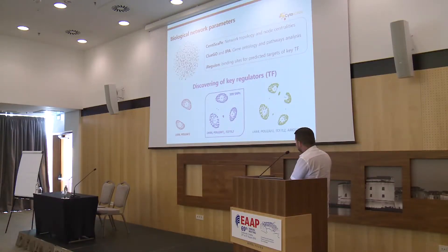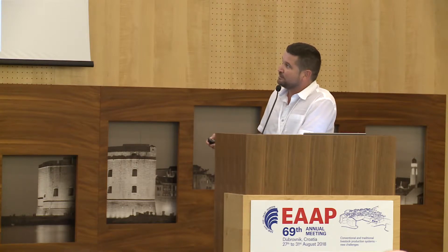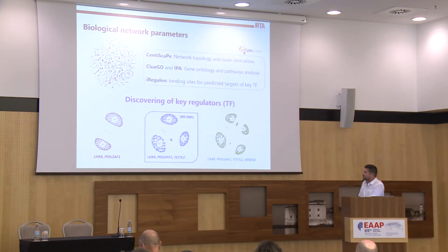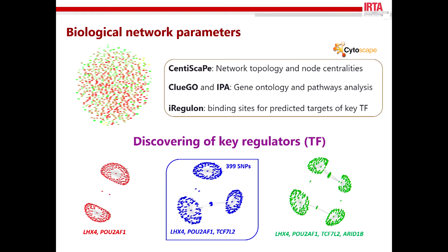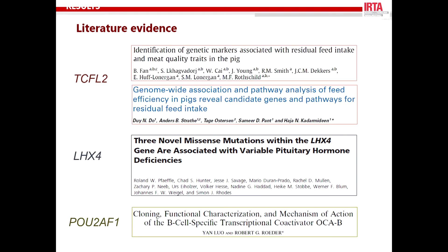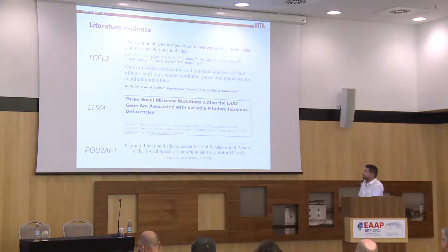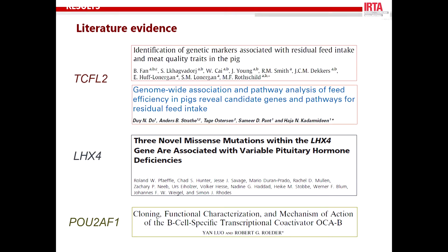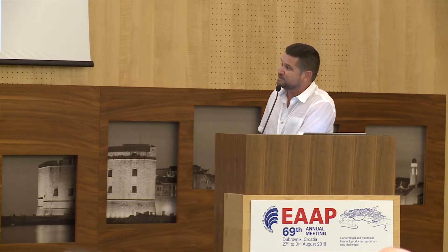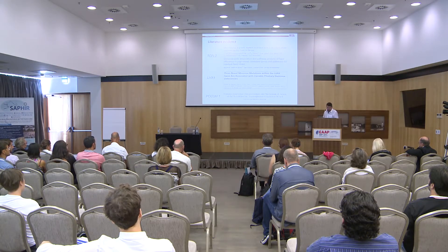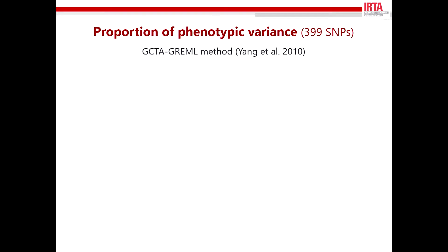We identified within the network the putative key regulators, doing so for combinations of dual trios or quartets of transcription factors. The best combination we identified was three transcription factors co-associated with 399 SNPs: LXR4, POU2F1, and TCF7L2. We checked the literature and were quite pleased to find that all three transcription factors have been associated with feed efficiency. TCF7L2 has been associated in two different studies with residual feed intake, meat quality traits, and feeding behavior. This transcription factor is important in the regulation of the pituitary gland, which plays an important role in regulating feeding, and is also important for regulation of the immune system.